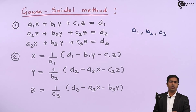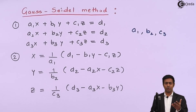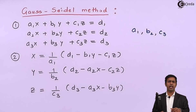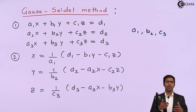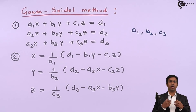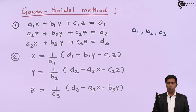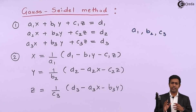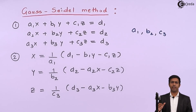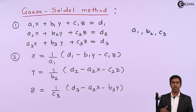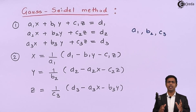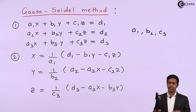To get the roots we use the method of iteration, since Gauss-Seidel is an iterative method. We go through multiple iterations, coming closer to the roots each time. Once we reach the desired accuracy, that is our final answer. To start, we make initial assumptions — we assume the initial roots are zero.